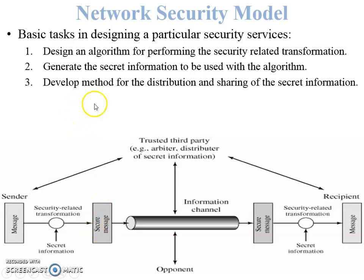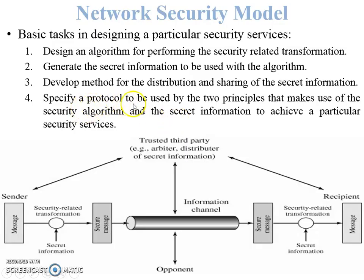Third, develop a method for the distribution and sharing of the secret information — whenever a secure message is generated, the secret key is transferred from sender to receiver. Fourth, specify a protocol to be used by the two parties that makes use of the security algorithm and the secret information. This protocol specifies whether both parties use the same key or different keys for encryption and decryption. If different keys are used, there is no need to distribute the key between sender and receiver.